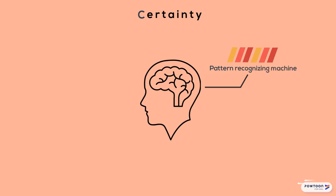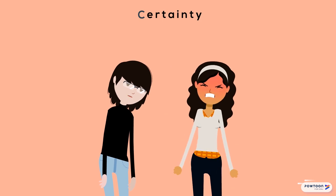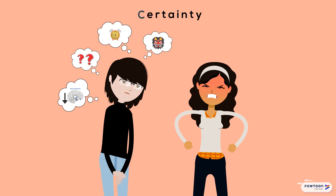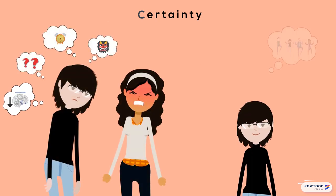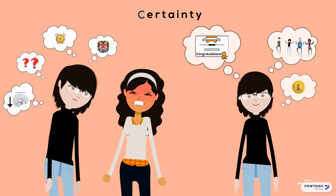Certainty has to do with how the brain operates — it's a pattern-recognizing machine constantly trying to predict the future. When the brain detects an error, it literally goes into error mode and you get distracted. Research has shown that increased ambiguity decreases activity in the reward parts of your brain and increases the threat response — uncertainty is threatening. Interestingly, certainty has been shown to be innately rewarding. Music is often used as an example: it's rewarding because it has simple repeating patterns we can predict. Research also shows that anticipation of a reward, and even anticipation of information about a reward, increases the reward network.